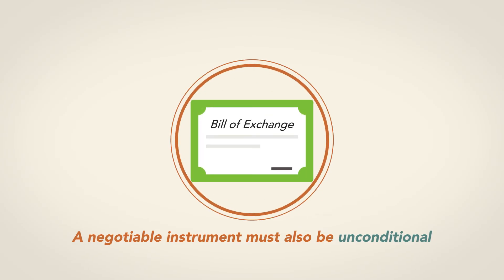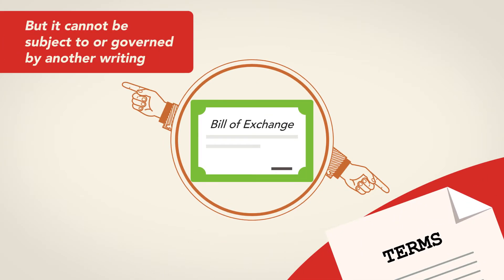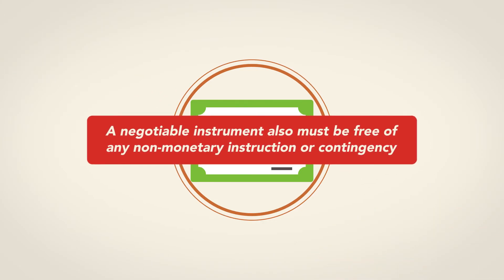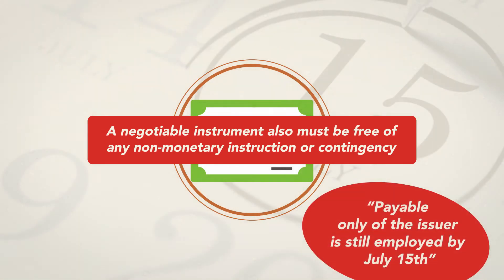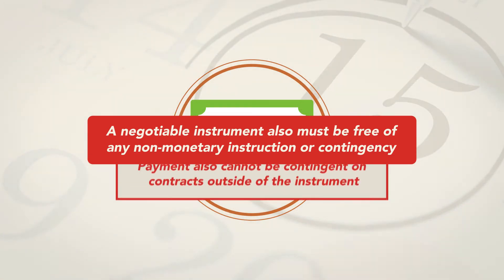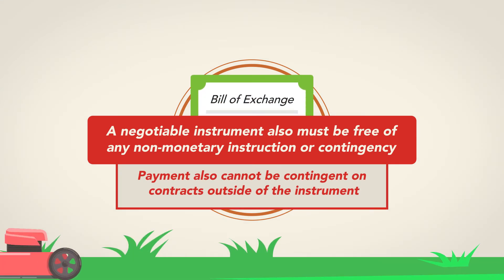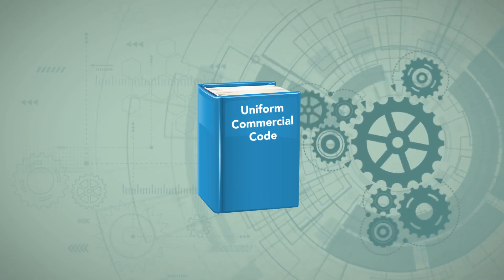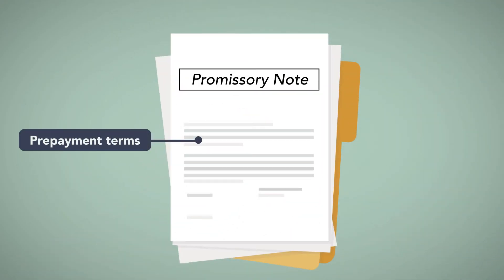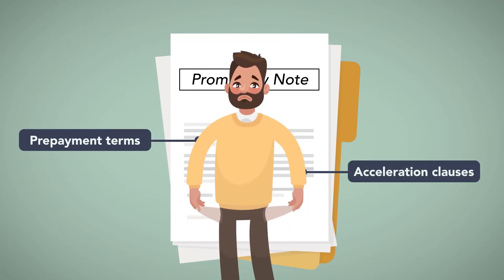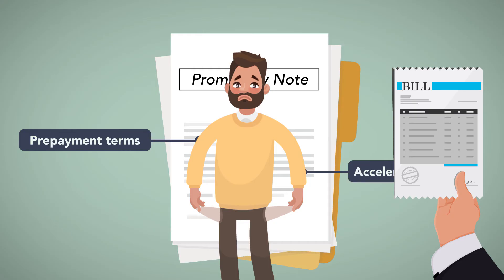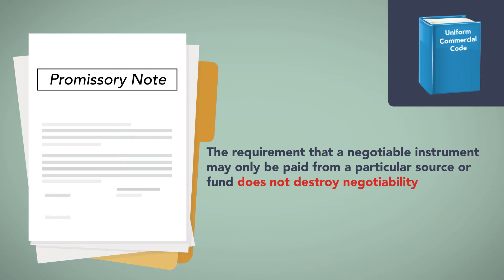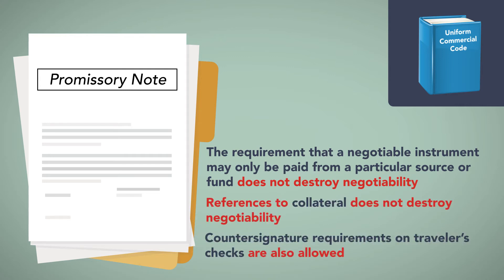To be negotiable, the instrument must also be unconditional. It may refer to another document, but it cannot be subject to or governed by another writing. A negotiable instrument also must be free of any non-monetary instruction or contingency, such as payable only if it snows on January 1, or payable only if the issuer is still employed by July 15. Payment also cannot be contingent on contracts outside of the instrument, such as payable only if the bearer mows the issuer's lawn on Saturday. The code does, though, allow reference to certain standard commercial practices without destroying negotiability. These include prepayment terms on a loan promissory note and acceleration clauses that make the entire debt due at once in the event of late or non-payment. Moreover, the requirement that a negotiable instrument may only be paid from a particular source or fund does not destroy negotiability. References to collateral and countersignature requirements on traveler's checks are also allowed.